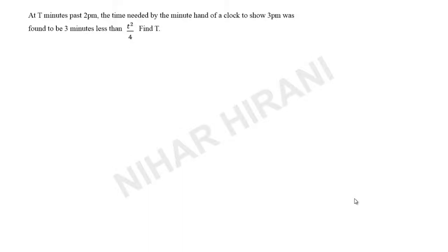Hello, let us solve this question. I will solve this question in the easiest and quickest way. At t minutes past 2 p.m., the time needed by the minute hand of a clock to show 3 p.m. was found to be 3 minutes less than t squared upon 4.